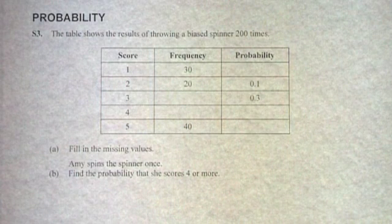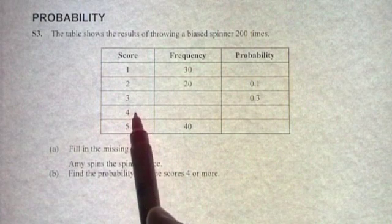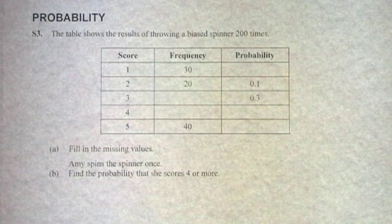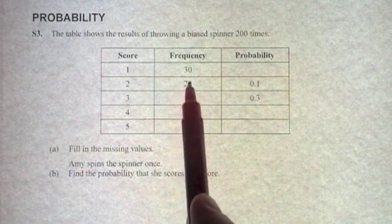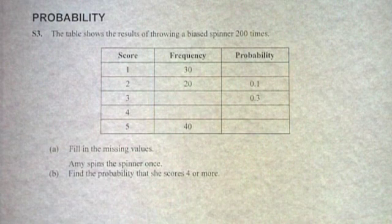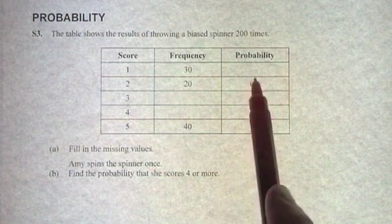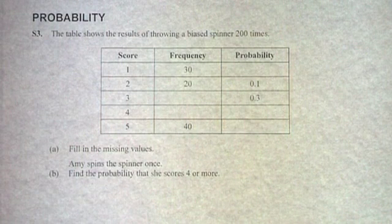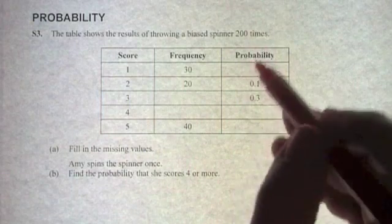This first question shows us a table with possible scores on a spinner: 1, 2, 3, 4, and 5. It sometimes tells you the frequency of how many times that particular score happened, and sometimes it's telling you the probability of that score happening. Overall, the spinner was spun 200 times.